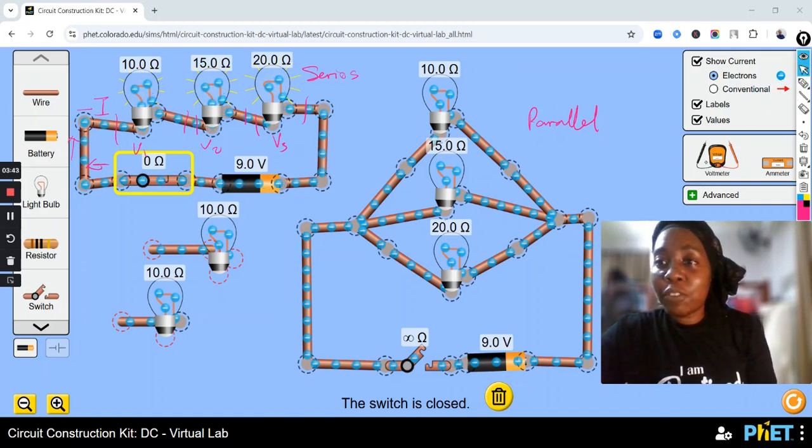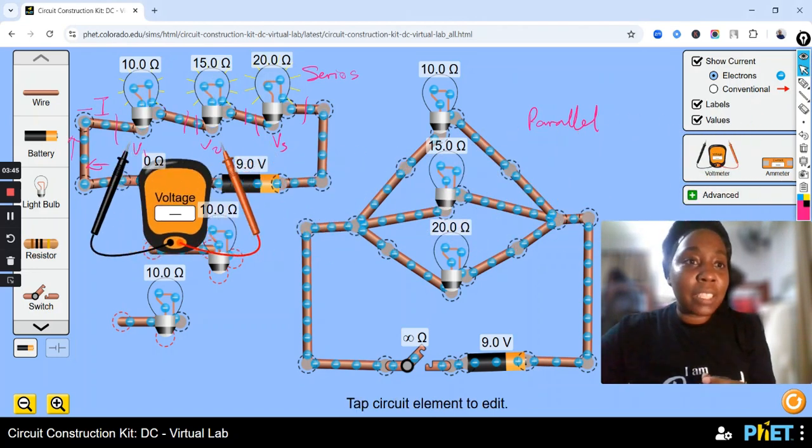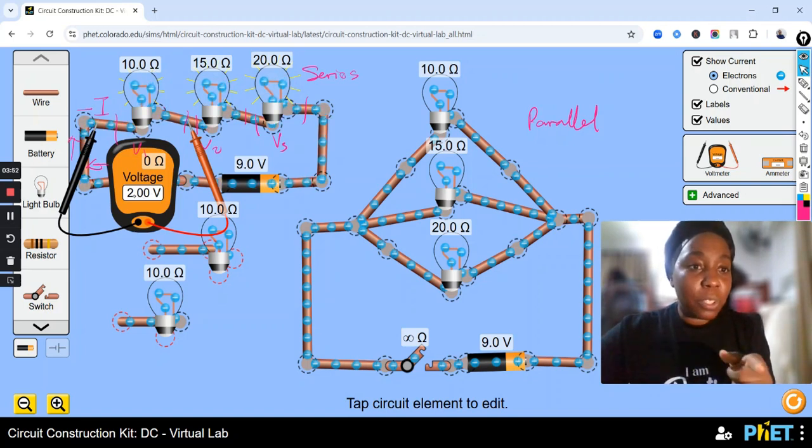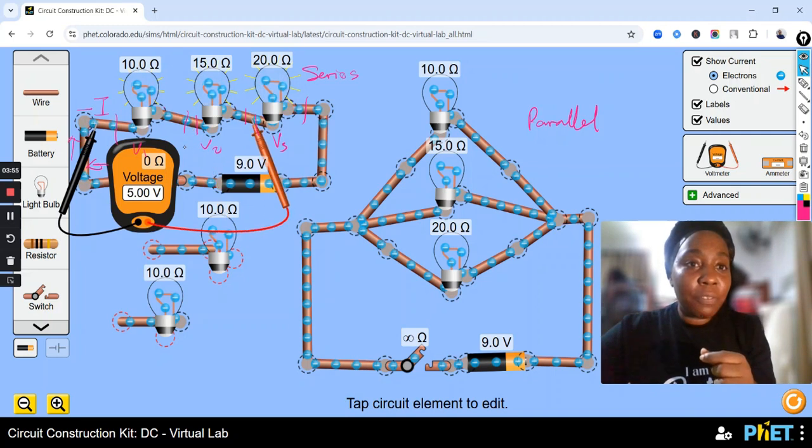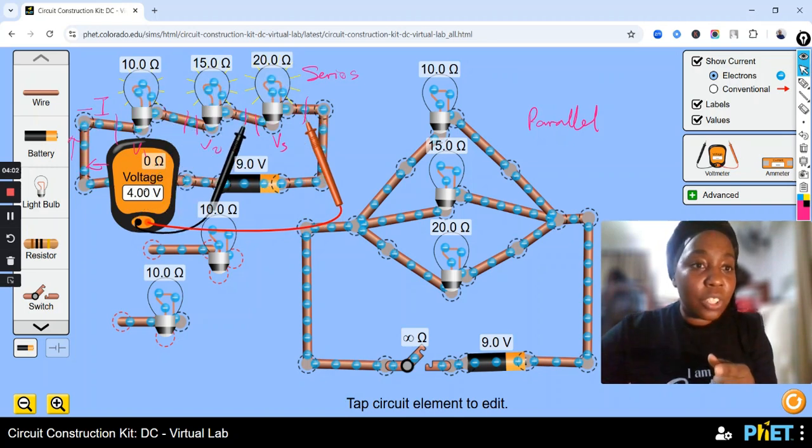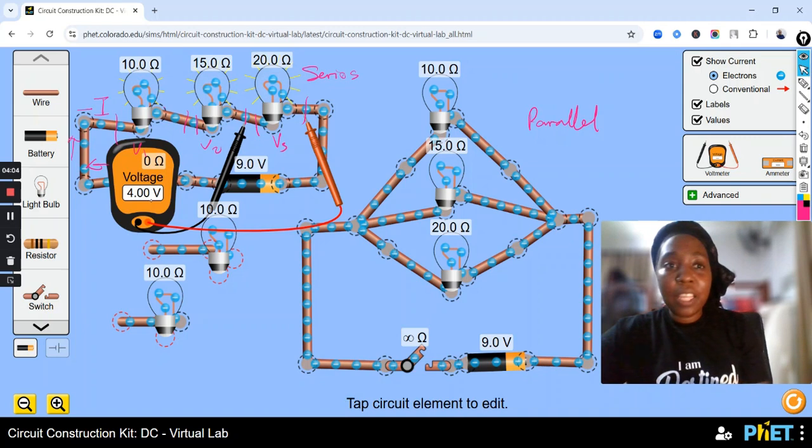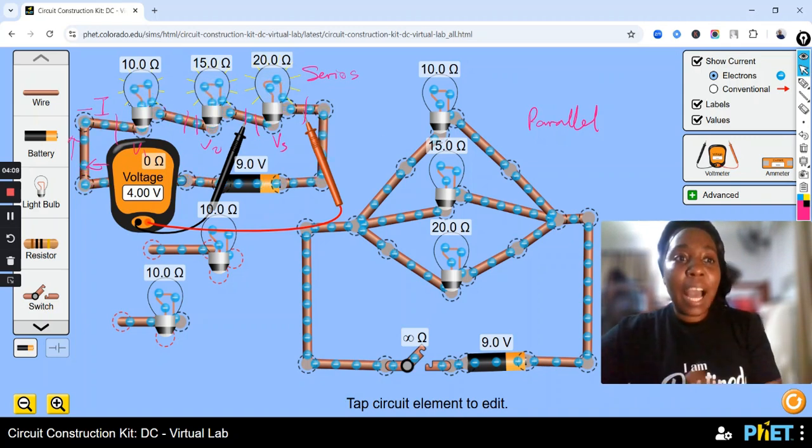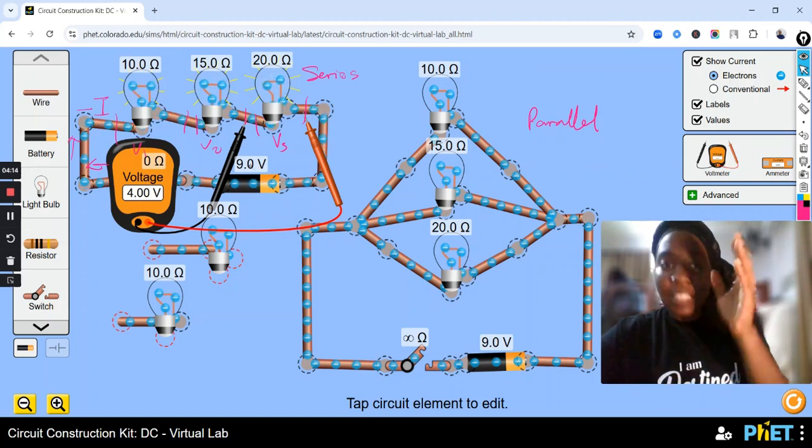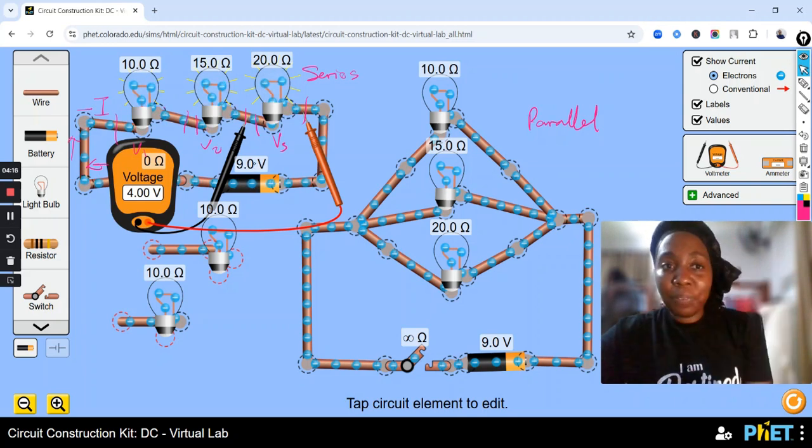And let us quickly check. You can see here I have used, we're going to use a voltmeter to check this. You can see here the voltage across this 10 ohms resistance here is 2 volts. Now, let us quickly check this. The voltage across this is 3. The voltage across this 20 ohms resistor is 4 volts. So in a series circuit, you have one path of current and the voltage difference across the resistors are different. They are different.